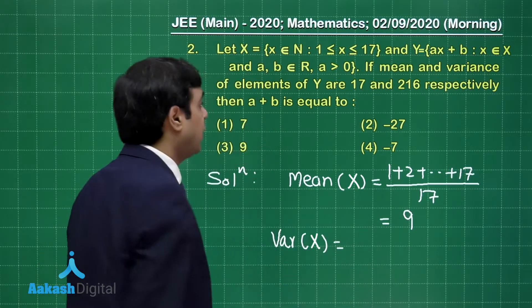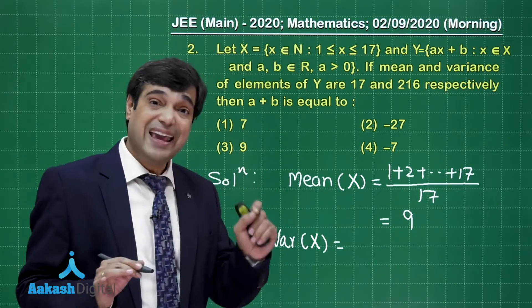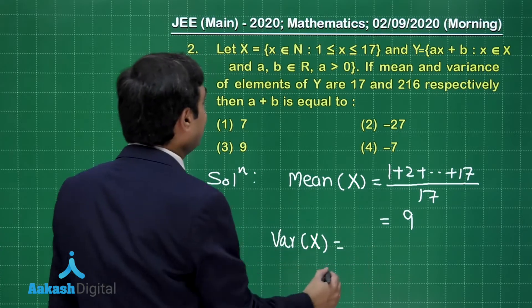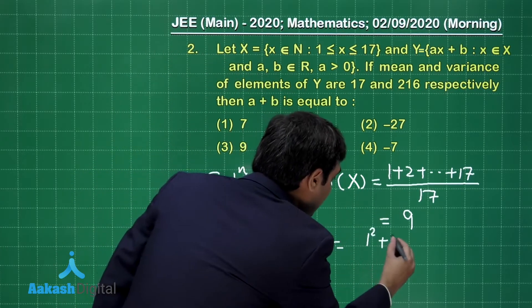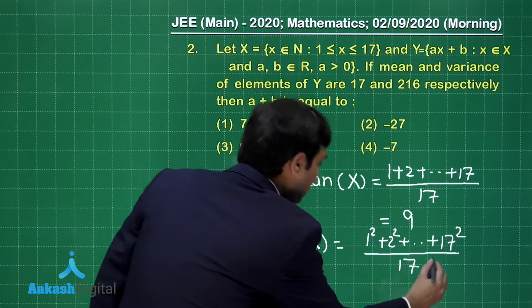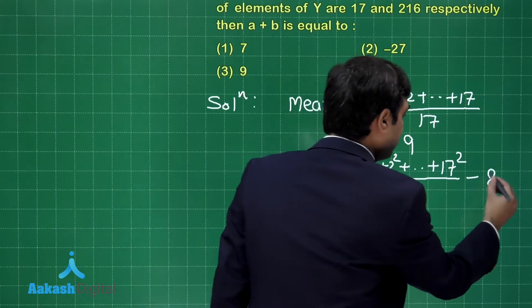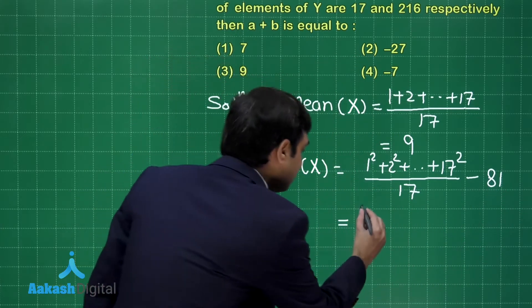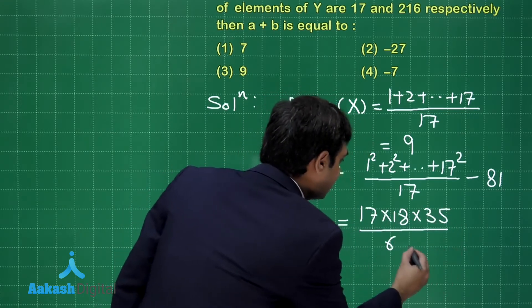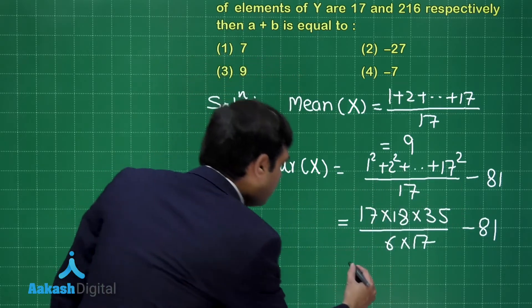Variance is simply given by (Σxᵢ²)/n - (Σxᵢ/n)². So here we can write (1² + 2² + ... + 17²)/17 - 81. When you go for this summation, this is (17 × 18 × 35)/(6 × 17) - 81. 17 is cancelled, so it is 105 - 81 = 24.